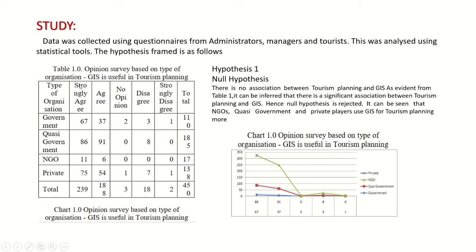Null hypothesis 1: there is no association between tourism planning and GIS, as evident from table 1. It can be inferred that there is a significant association between tourism planning and GIS; hence the null hypothesis is rejected. NGOs, COSI, government, and private players use GIS for tourism planning significantly more.